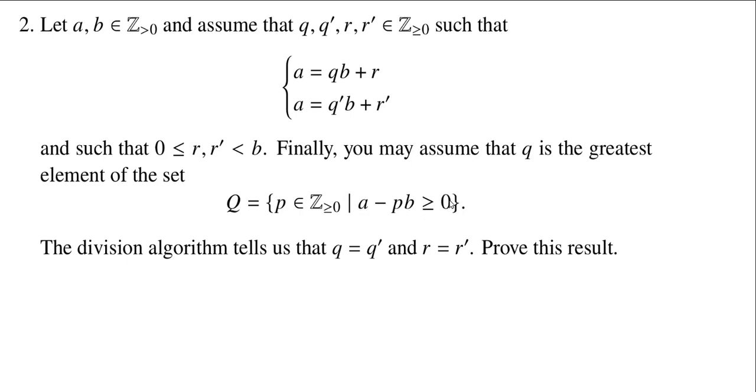you still get something which is non-negative. So we were able to show in class that this was definitely a subset of, for example, Z less than or equal to A. And as such, we can apply the well-ordering axiom to it. And we know then that we get a greatest element, and we call that greatest element little q.